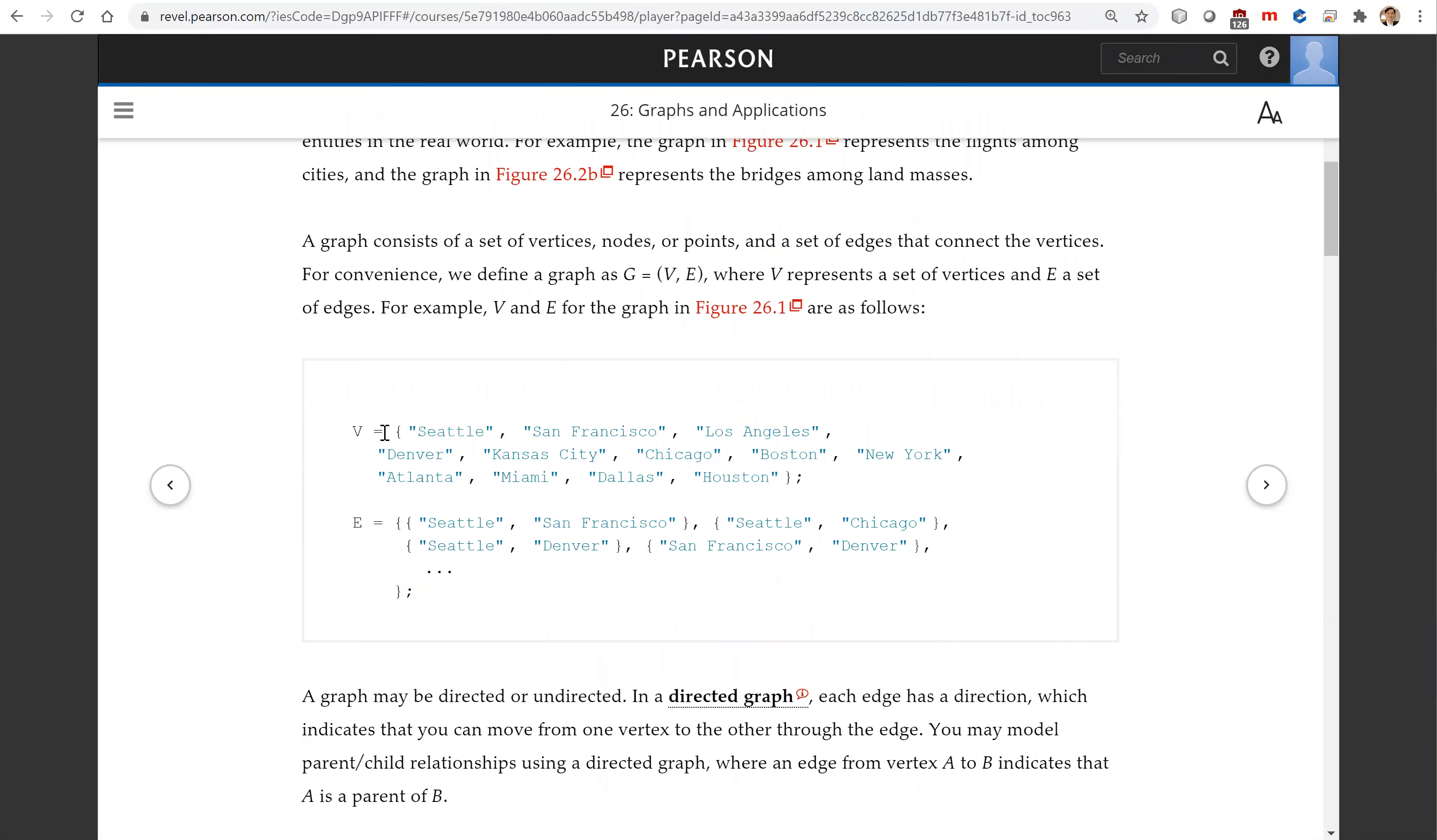For example, we have V as a set of vertices and E as a set of edges. Here's the edge from Seattle to San Francisco, from Seattle to Chicago, from Seattle to Denver, from San Francisco to Denver.